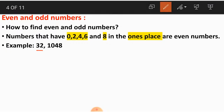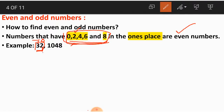Let us look at this example. The first example is 32. In the ones and tens places, what are we having in the ones place? In the ones place we are having 2. And is 2 among the numbers 0, 2, 4, 6, 8? Yes, 2 is one of these numbers. So this number 32 becomes an even number — 32 is having one of these numbers at the ones place, so the whole number 32 becomes an even number.